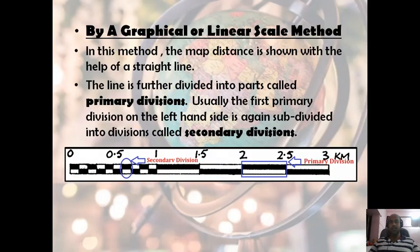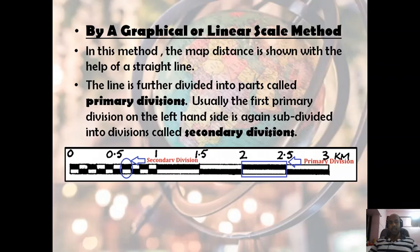In the graphical or linear scale method, the map distance is shown with the help of a straight line. The line is divided into parts called primary divisions. As you can see, this line is subdivided into five divisions. The first primary division on the left-hand side is further subdivided into smaller parts called secondary divisions.